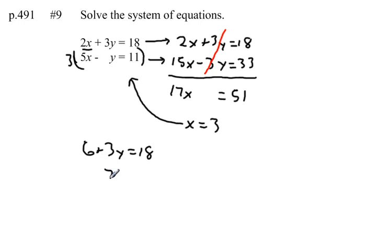If I subtract 6 from both sides, I get 3y equals 12. Dividing by 3, I get y equals 4. So my point is 3, 4. x equals 3, y equals 4.